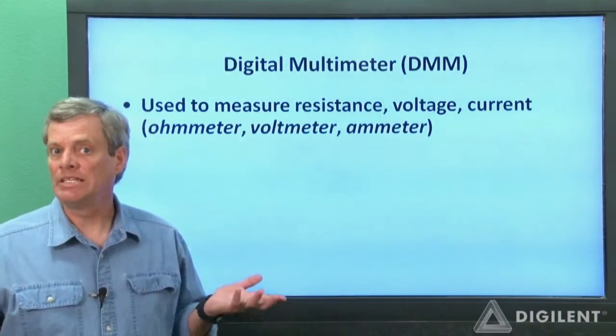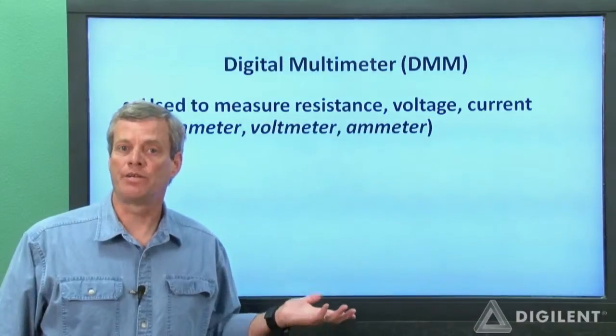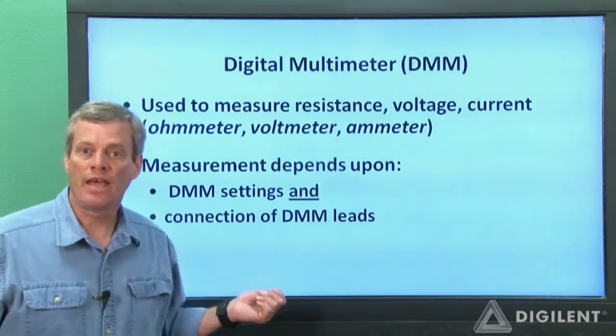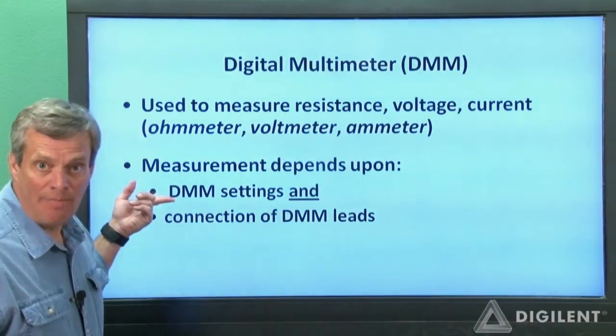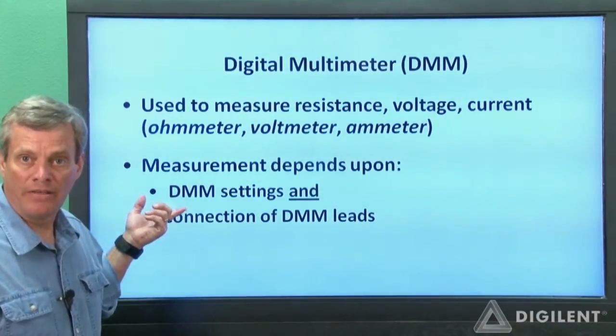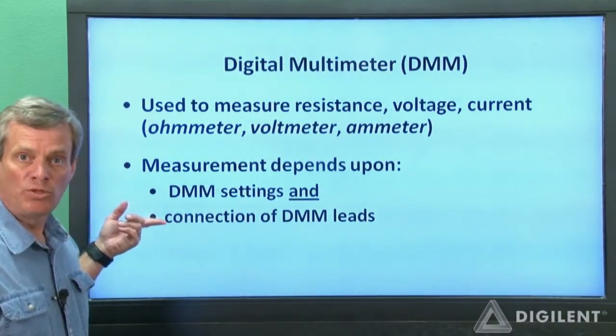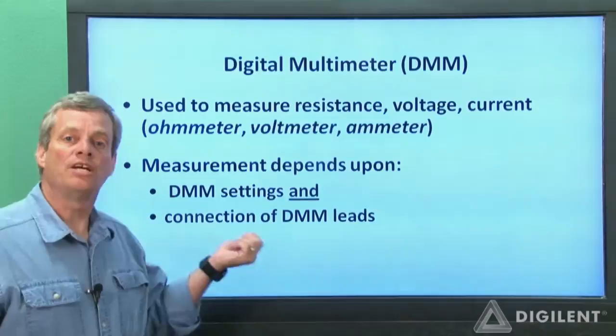Measuring voltage, for example, is not the same process as measuring current. In fact, to make a measurement you need to do two things. You need to select the type of measurement you want, usually using a dial or a button on the DMM, and you also need to connect the DMM probes or leads correctly for that measurement.